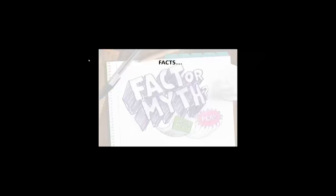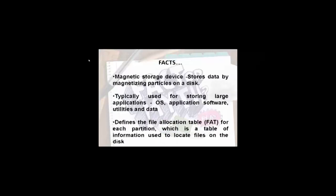Facts about the hard disk drive: It's a magnetic storage device, that is, it stores data by magnetizing particles on a disk. Typically used for storing large applications like OS, application software, utilities and data. It defines the file allocation table for each partition, which is a table of information used to locate files on the disk.